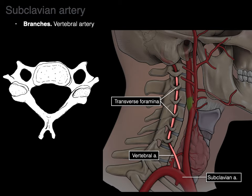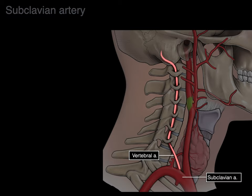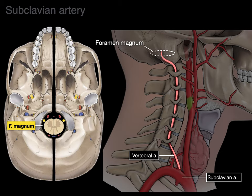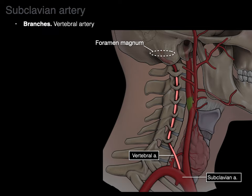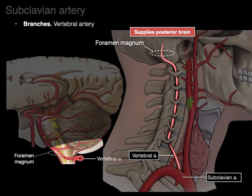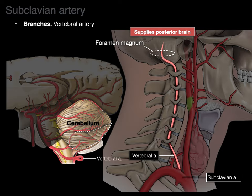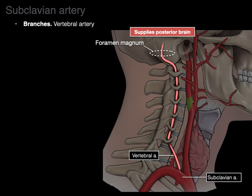The apex of the vertebral triangle is where the vertebral artery enters the transverse foramen of the cervical vertebrae, ascending up through the neck. In the superior view of the cervical vertebrae, the transverse foramina are shown in blue with the vertebral arteries coming up through those sides. The vertebral artery ascends through the suboccipital triangle and then through the foramen magnum, ultimately supplying the posterior part of the brain. Both vertebral arteries come together to make the basilar artery, supplying the cerebellum and posterior cerebrum.